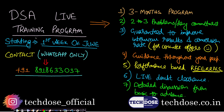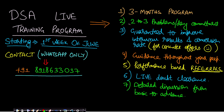Before looking at the problem statement, I'd like to announce our DSA live training program, which is a 3-month live training course. Your commitment will be to solve 2 to 3 problems per day, and we guarantee improvement in your interview results and conversion rate. You'll receive guidance throughout the course and even after, along with performance-based referrals to companies. The course covers all topics from basic to advanced. For more information, contact us on our WhatsApp number shown here. We are starting in the first week of June.